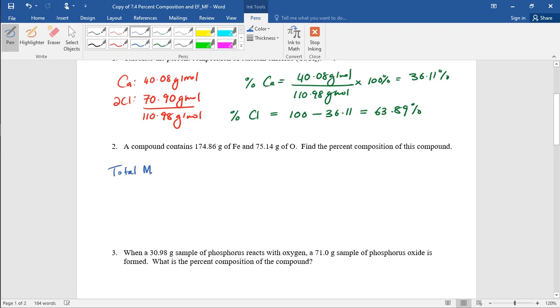So the total mass is equal to 174.86 grams plus 75.14 grams. That is equal to 250 grams. And we're going to say some number, x number of iron and y number of oxygen is in this compound. It could be any number, based on whether iron is 2 or iron is 3. So let's find the percent of iron then.